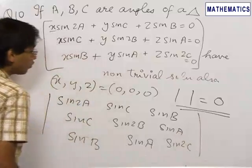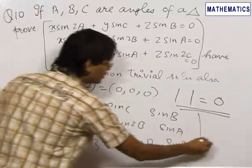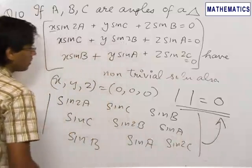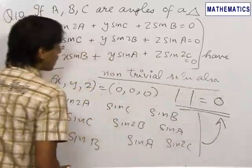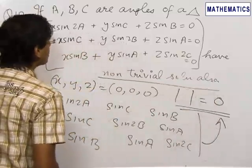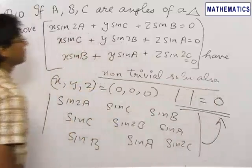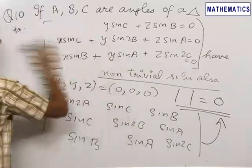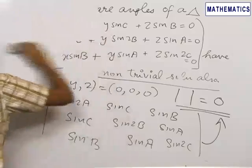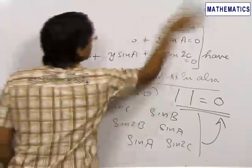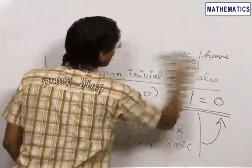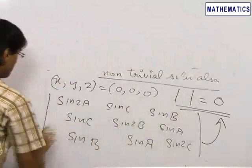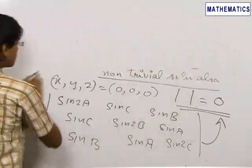We need to prove that the value of this determinant is 0 for the system of equations to have a non-trivial solution. To do this, we can find the values of these sine terms.